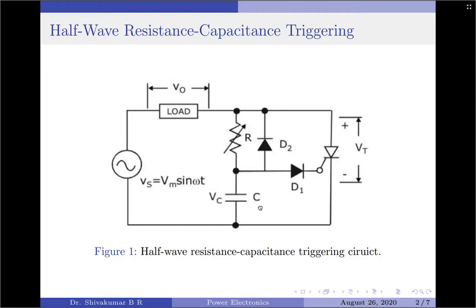In simple words, the capacitor voltage needs to be at least equal to or greater than the diode D1 voltage drop plus the minimum voltage required to trigger the gate of the thyristor — represented as VGT plus VD1. When the capacitor voltage becomes equal to or greater than VD1 plus VGT, the thyristor will be triggered. This time constant is related directly to the value of R, the variable resistor. As R increases, the rate of charging of the capacitor decreases, and if R decreases, the rate of charging increases.